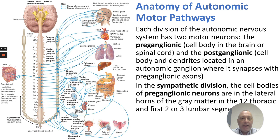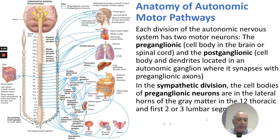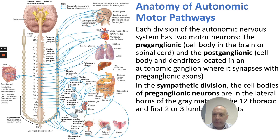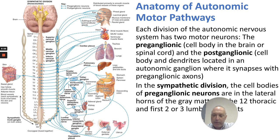Looking at the anatomy of the autonomic motor pathways: each division has two motor neurons — the preganglionic, whose cell body is in the CNS, and the postganglionic, whose cell body and dendrites are in the autonomic ganglia outside the CNS. In the sympathetic division, the cell bodies of preganglionic neurons are in the lateral horn of the gray matter in the 12 thoracic and first 2-3 lumbar segments. We can see preganglionic neurons synapsing with the superior cervical ganglion, middle cervical, inferior cervical, and various thoracic ganglia.